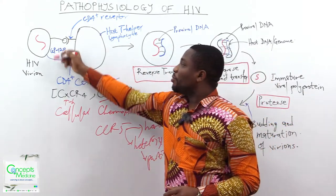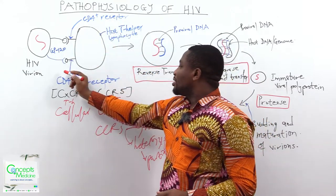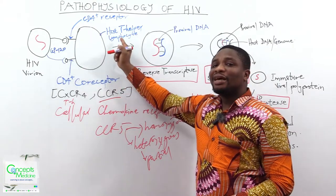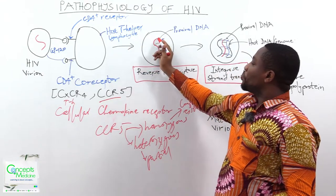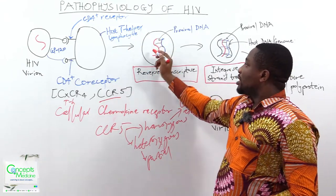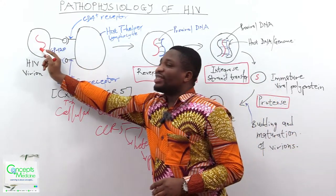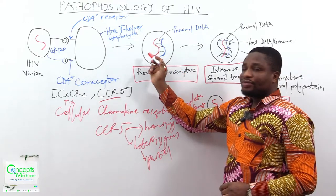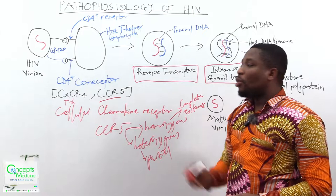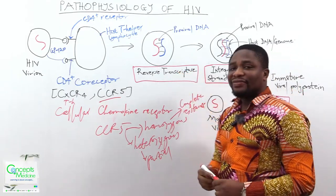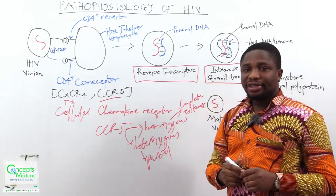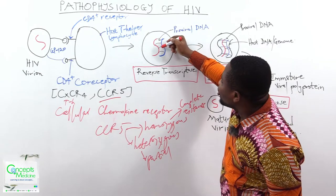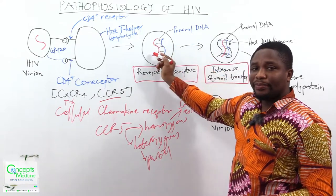Now, with the virion binding to both the CD4 receptor and the coreceptor, it will be allowed entry into the host cell — the T-helper lymphocyte. Once it gets into the host cell, the single-stranded RNA will be released into the host cell. The moment it is released, it will encode the enzyme we call reverse transcriptase. Reverse transcriptase facilitates the formation of a complementary strand in relation to the RNA, with the RNA becoming the template on which the DNA primer is formed.